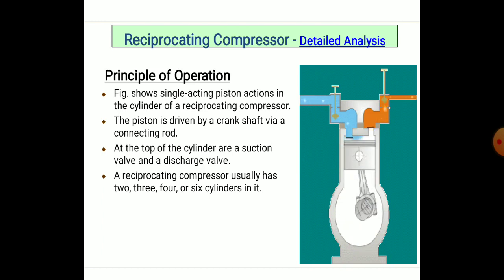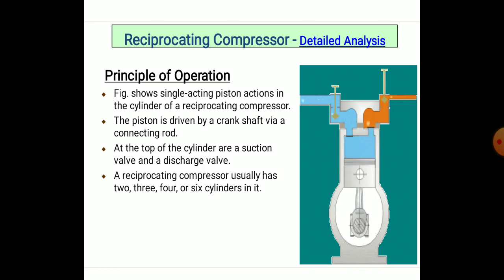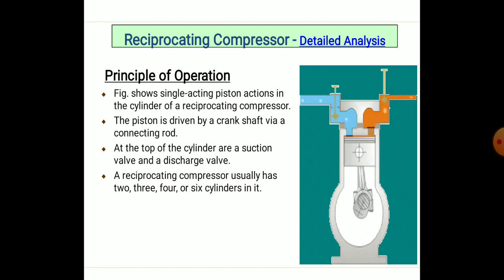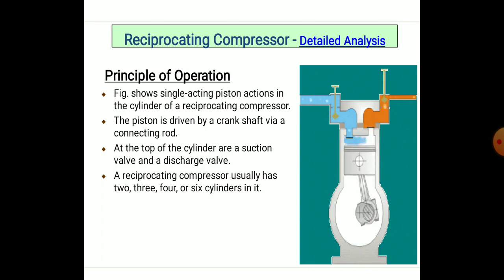Only two valves are provided — the suction valve draws air from the atmosphere and the discharge valve delivers it to the reservoir or container. Reciprocating compressors can use two, three, four, or sometimes six cylinders. As the requirement for compressed air increases, a six-cylinder engine can be used for compression.